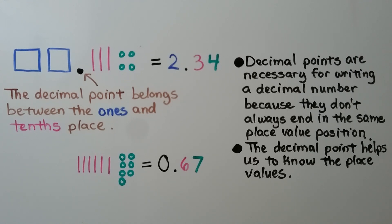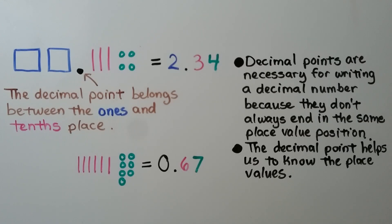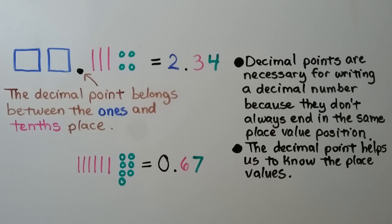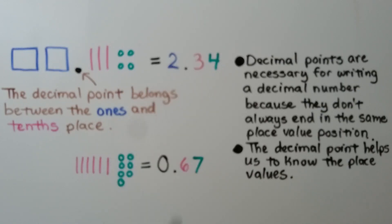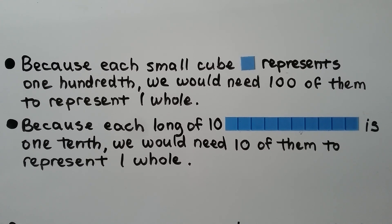Remember, the decimal point belongs between the ones and the tenths place. Squares represent ones and lines represent tenths. Decimal points are necessary for writing a decimal number because numbers don't always end in the same place value position. The decimal point just to the right indicates the tenths place, and the next place is hundredths. Because each long of ten is one tenth, we need ten of them to represent one whole.